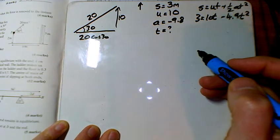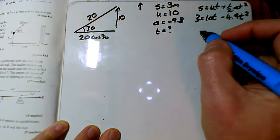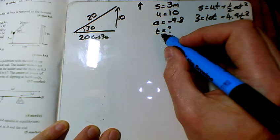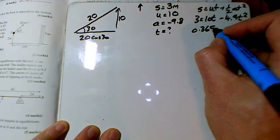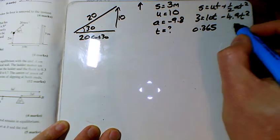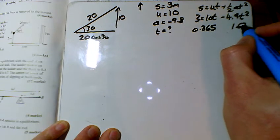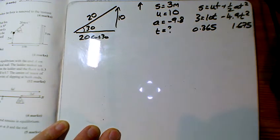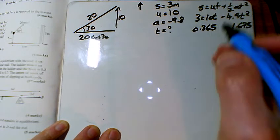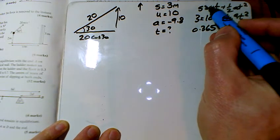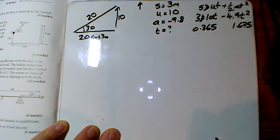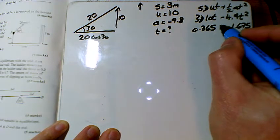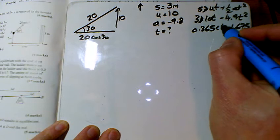3 equals 10 t minus 4.9 t squared. If I solve that quadratic, I can see that the times when it's at 3 meters is 0.365 and 1.675. That's when it equals 3. Of course, if we wanted to clear it, we want it to be greater than 3. So if I solve that as a quadratic inequality instead, it will tell you that it's greater than 3 in between either of those two times.